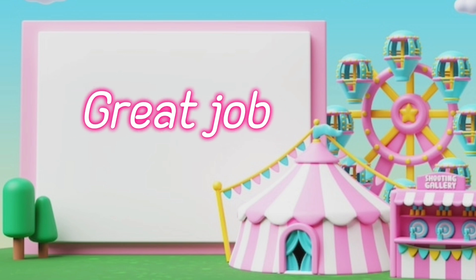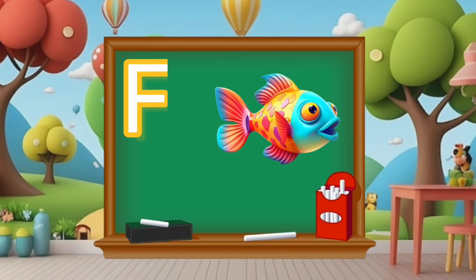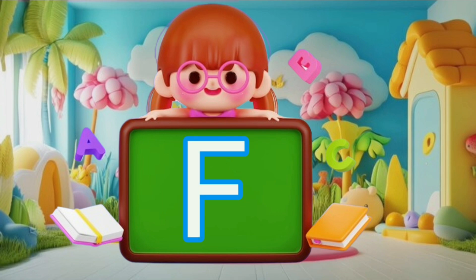Now let's learn the next five letters. F, G, H, I and J. F is for fish. Can you say F? F.